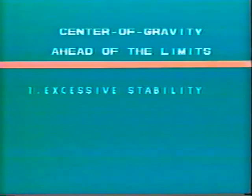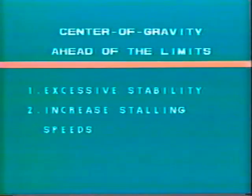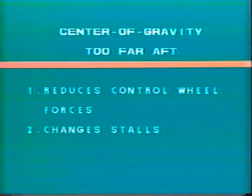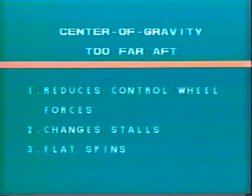Let's review the consequences of loading an aircraft beyond the limits of the center of gravity envelope. A center of gravity ahead of the limits will: one, produce excessive stability requiring increased control wheel forces; two, increase stalling speeds; and three, decrease performance. A center of gravity too far aft may: one, reduce control wheel forces with the potential for pilot over-controlling; two, change stall characteristics from benign to violent; and three, develop a tendency for a normal spin to become a flat spin.